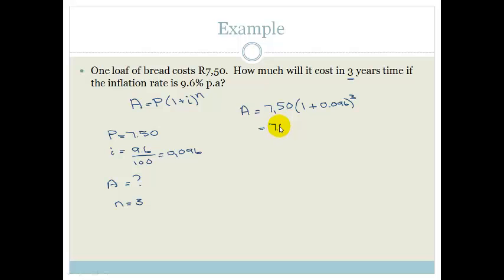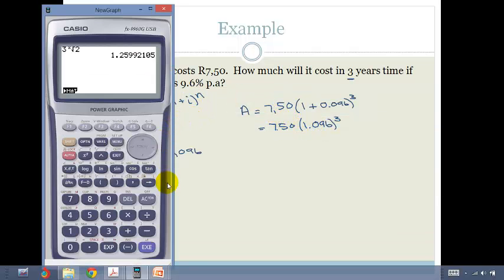Therefore, do you agree that 7.50 times 1.096 all to the power of 3? And then we're going to grab our calculator. Okay fine, let's do that.